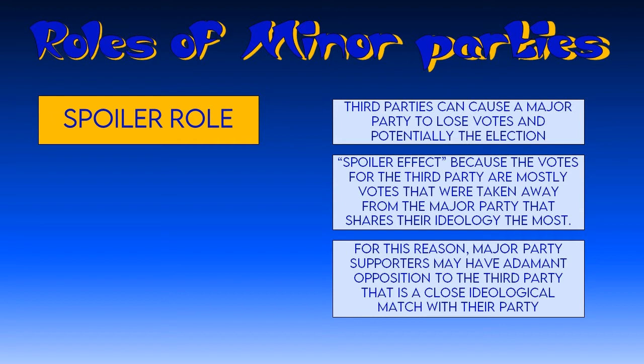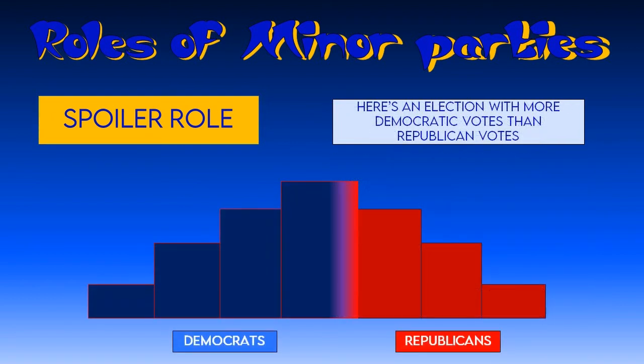For this reason, major party supporters — Democrats and Republicans — usually have strong opposition to the third party that shares the most ideas with them. Democrats dislike liberal third parties, and Republicans dislike conservative third parties, because those third parties end up damaging the major parties in elections.